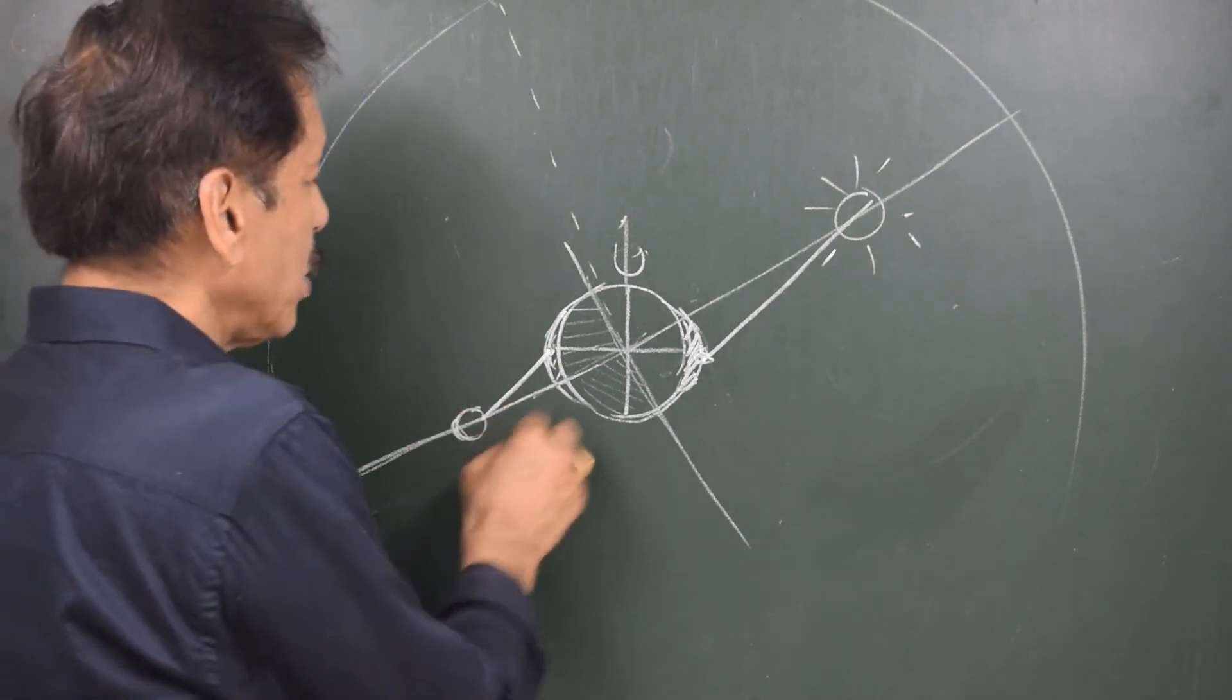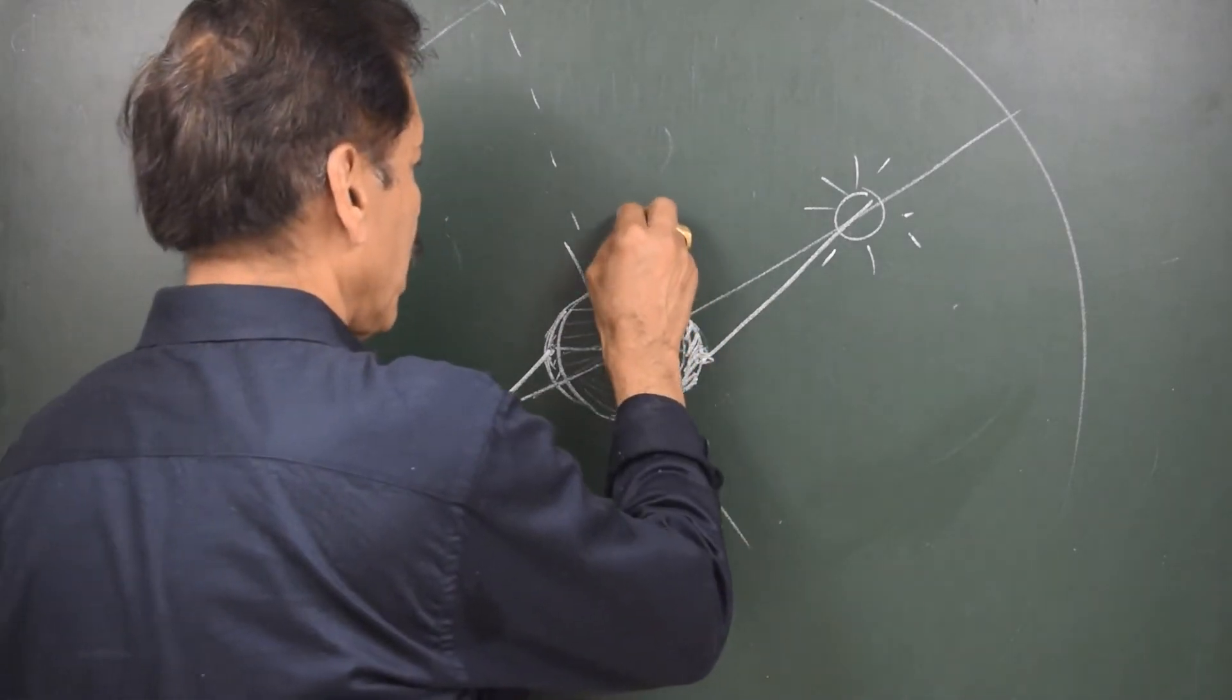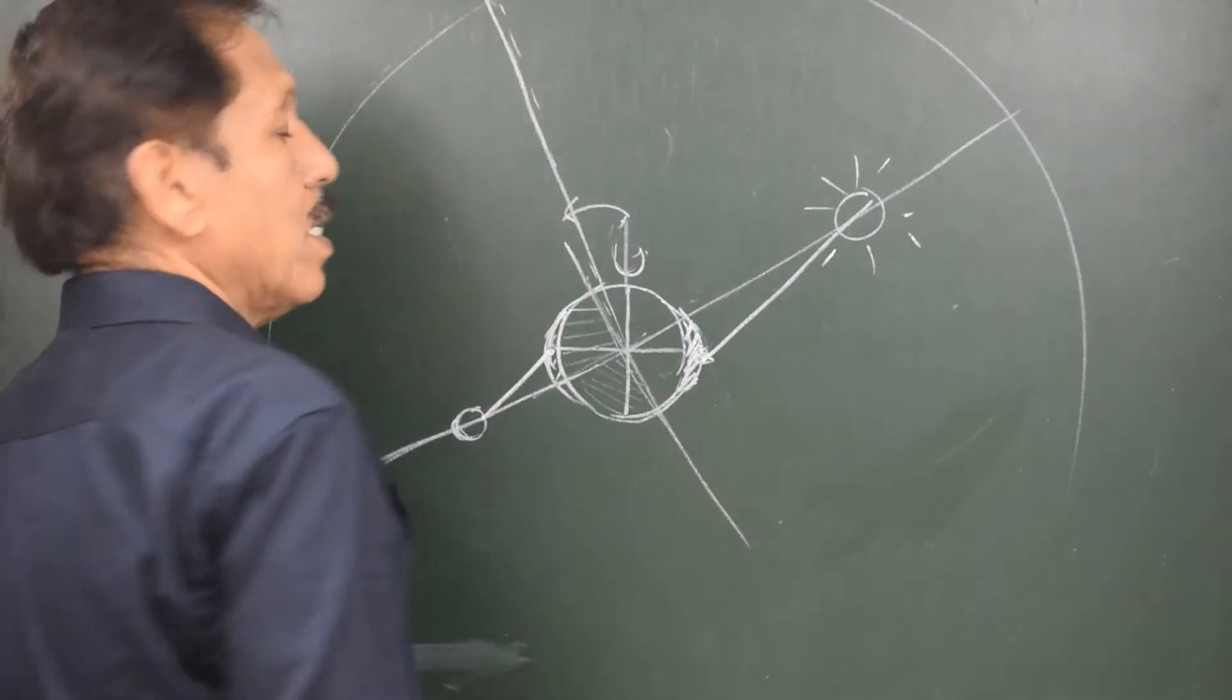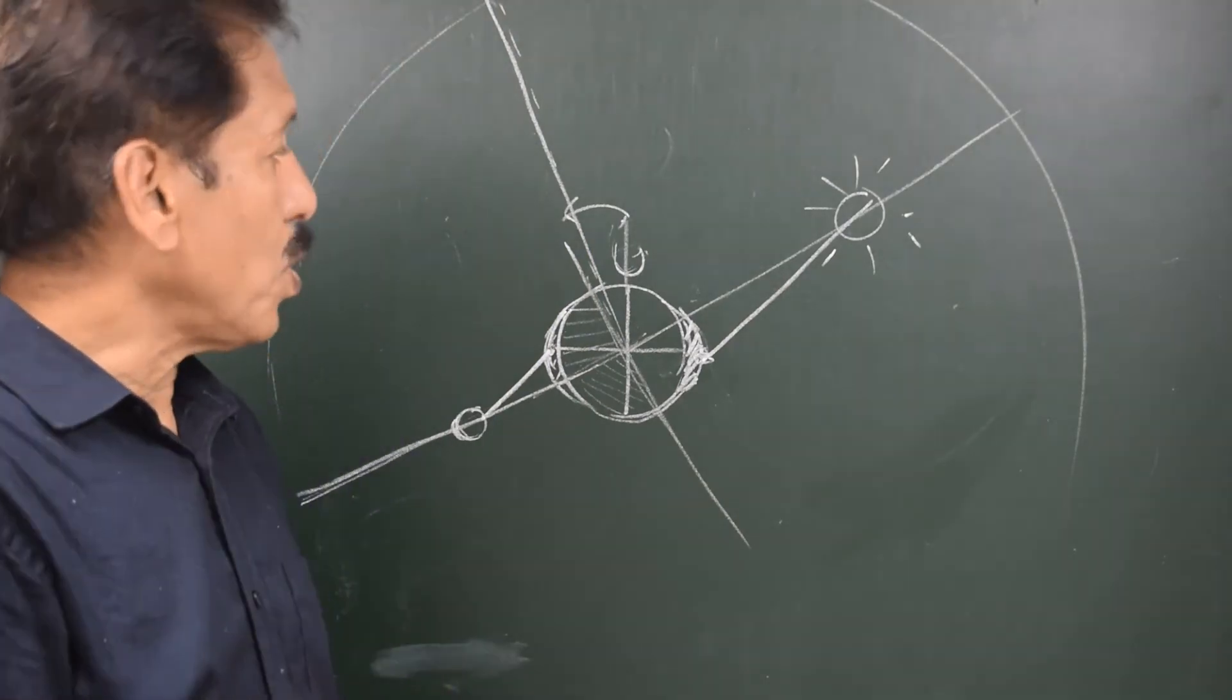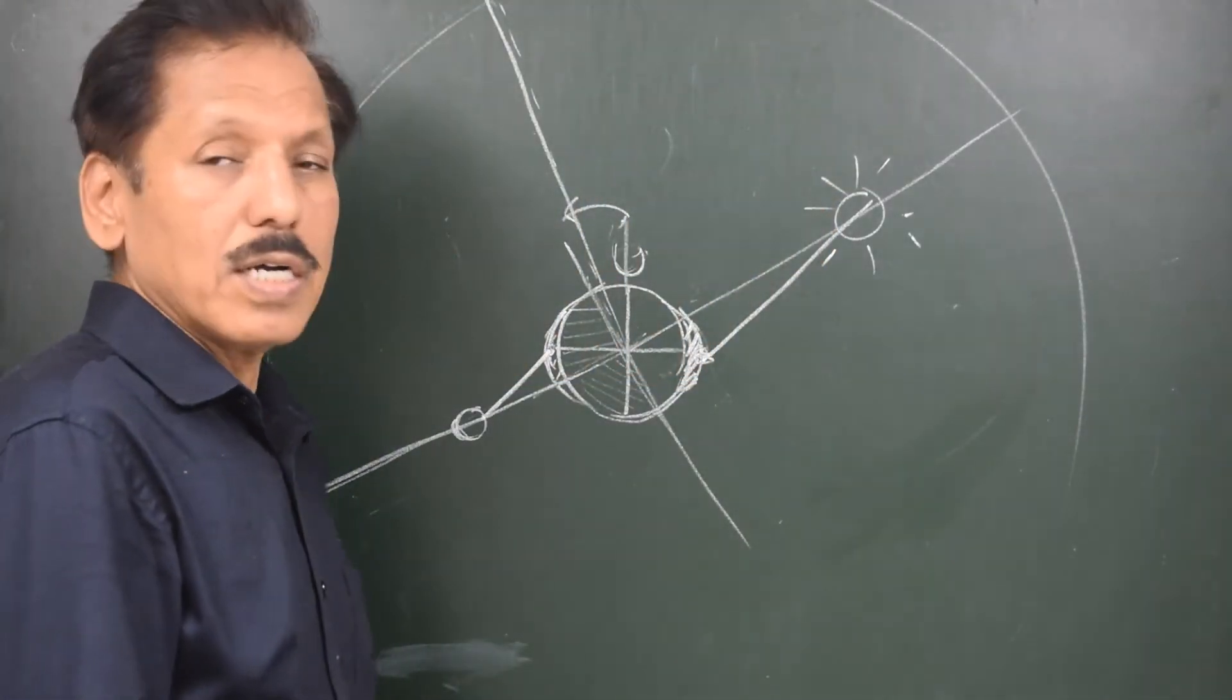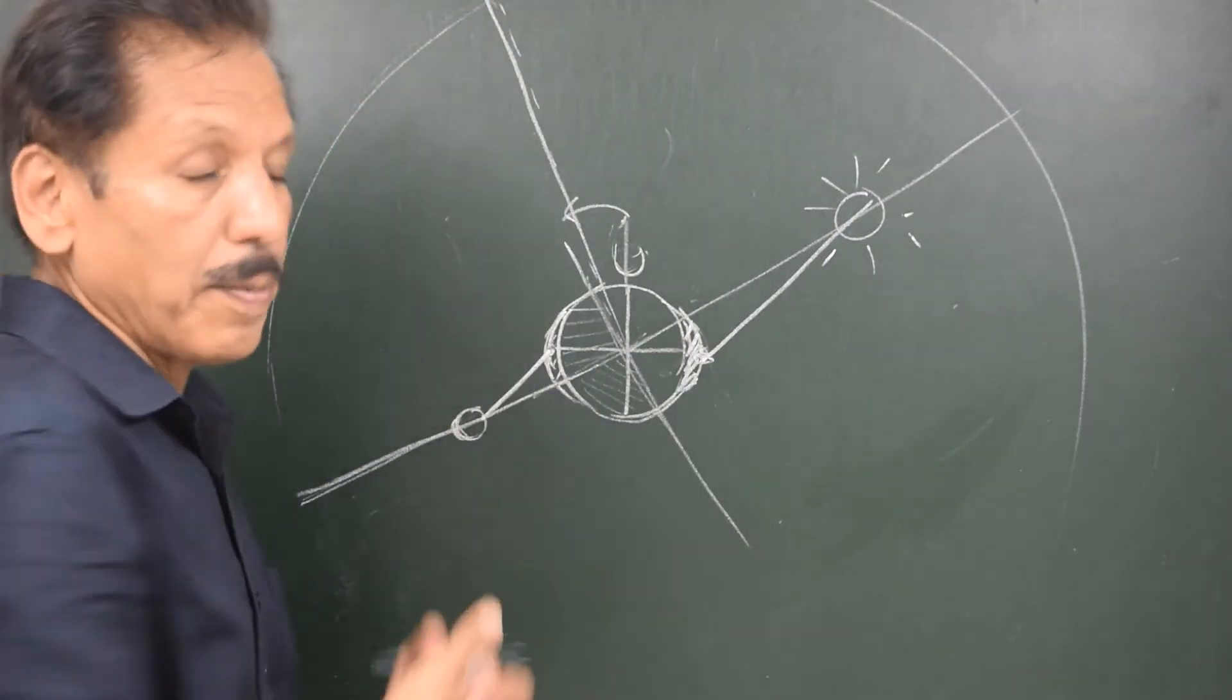By moon trying to pull this weight and sun trying to pull this weight, they are telling the axis of the Earth as if you better come and get synchronized with this axis which is the axis of ecliptic pole. So for ages, for centuries, and for millions of years, moon and sun both are trying that this axle instead of pointing towards the celestial pole points towards the ecliptic pole.